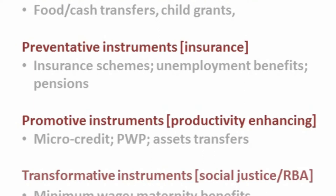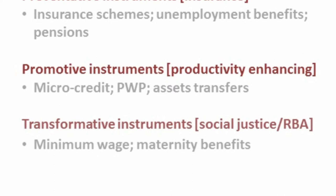Finally, the newest area is transformative instruments, which is something we particularly work on at IDS. In much of the agenda focused on economic pathways for managing risk and vulnerability, there is a big social aspect missing. How can you address the underlying constraints that put people in that position in the first place? It's dealing with issues of marginalisation and exclusion — a rights agenda — with examples like introducing minimum wage and maternity benefits.